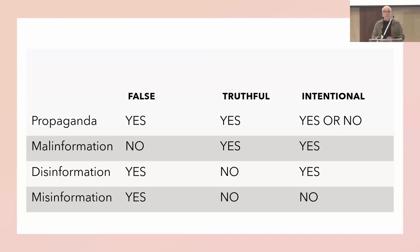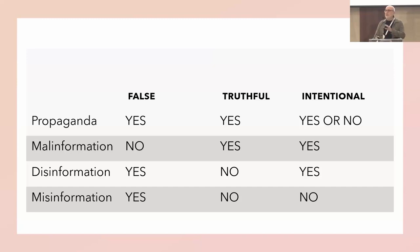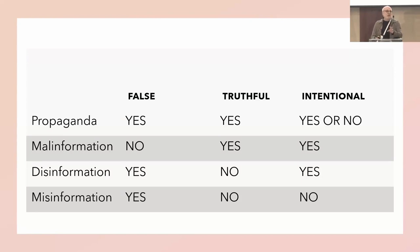Most of the time we confuse them. For example, mal-information is deliberately publishing damaging images to harm someone, a product, or a brand. If you are mad at your girlfriend and you disseminate her nude photograph, that is mal-information. It's true, but it shouldn't be shared. Similarly, if you are mad at your company and disseminate ugly production photographs, that is also mal-information. Misinformation is false, untruthful, but unintentional information.